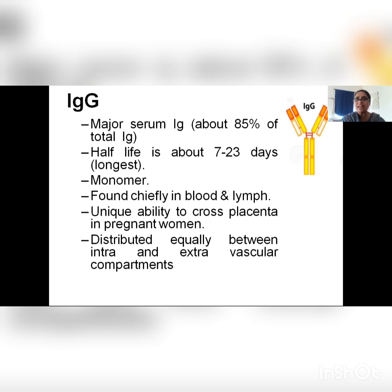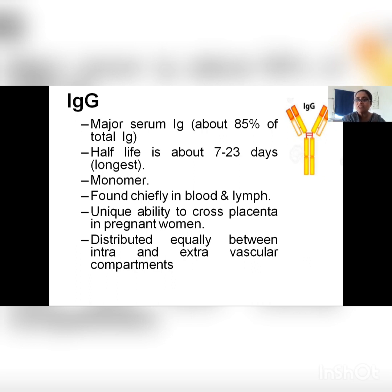Coming to the first class of immunoglobulin, IgG: about 85% of the total quantity of immunoglobulins present in the blood is IgG. It has the longest half-life and can survive for 7 to 23 days — the longest survival of any immunoglobulin in the serum. It is found in the form of a monomer, chiefly in blood and lymph. It has the unique ability to cross the placenta in pregnant women — this is the only immunoglobulin that can cross the placenta and be transferred from mother to fetus.